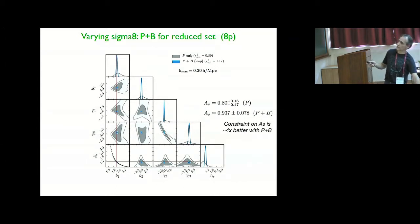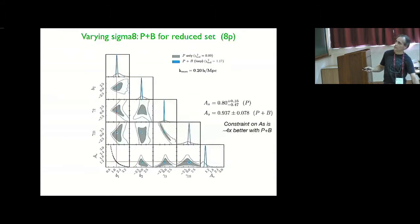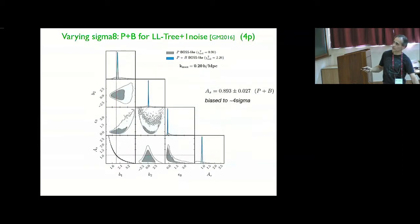Now, if I, instead of doing loops, I use the model that people have used recently in analyzing the BOSS survey, you see now that the problem, because now the constraint on AS is biased. So it's actually, we don't get the right answer, which is one in this case. You are biased by basically four sigma in getting the right sigma-8. So including the loops actually makes you consistent with the correct answer for sigma-8 or for AS, as opposed to using this very simplified model.